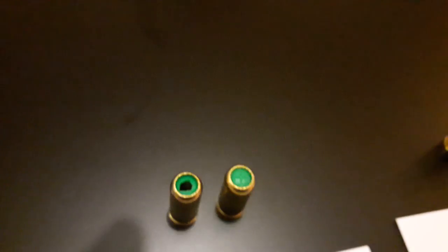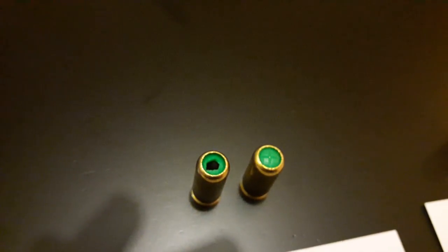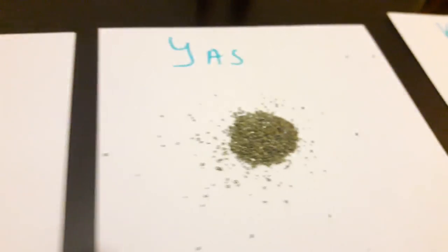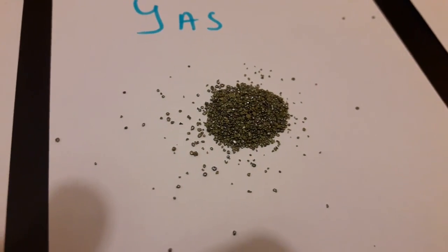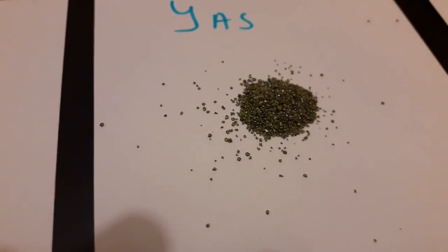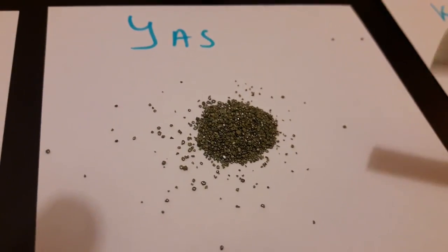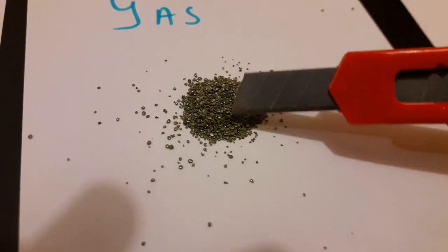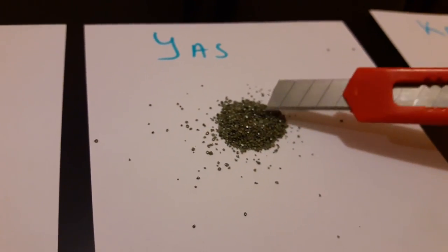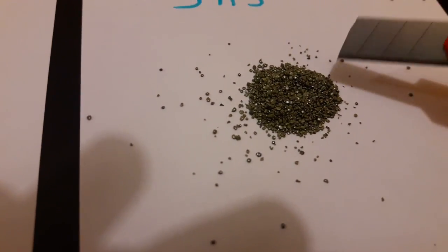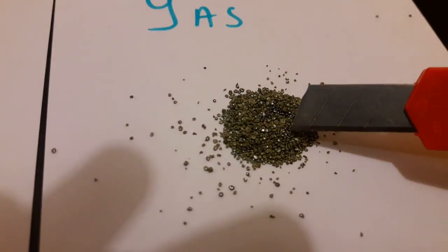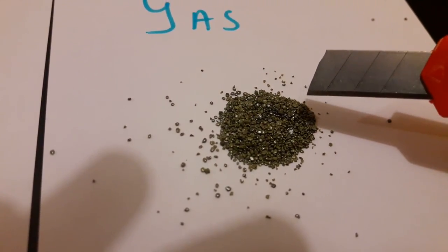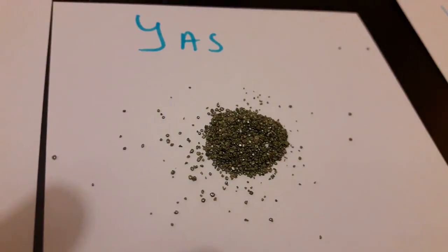After that we have Yas. Inside it, it kind of looks like the first Oscarsán rounds, I mean the gunpowder, but basically it's the same, probably, but not so shiny as the first one. It's the Yas.